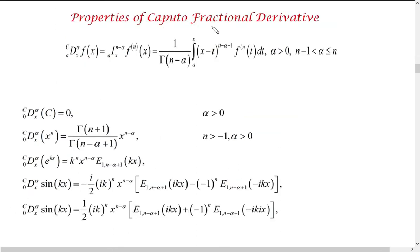Next we have the Caputo fractional derivative — the second approach. Here I use the letter C to indicate the Caputo sense. The difference from RL is that in the Caputo sense we first differentiate the function n times and then take the integral of order (n minus alpha), whereas in Riemann-Liouville we first integrate and then differentiate. Using this definition, the derivative of a constant is zero — matching classical calculus results. For polynomial functions, the Caputo and RL derivatives give the same result, but for other functions there are slight differences.